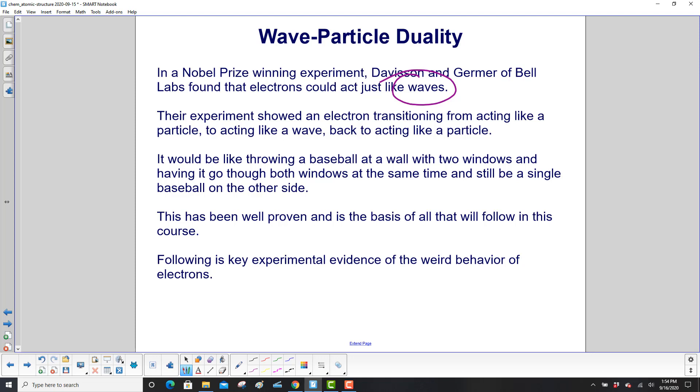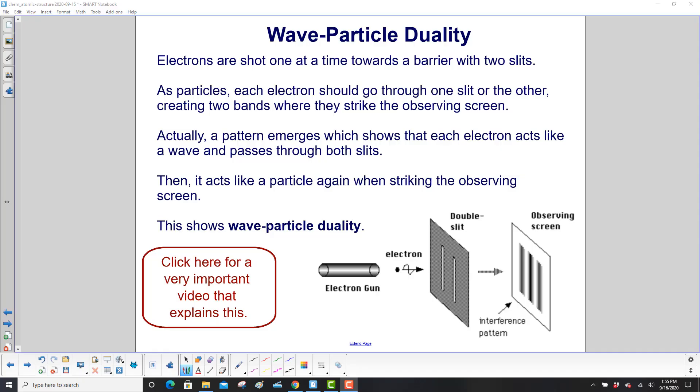Following is key experimental evidence of the weird behavior of electrons. Here's the experiment. Electrons are shot one at a time, and here's our electron gun down here, shooting an electron one at a time.